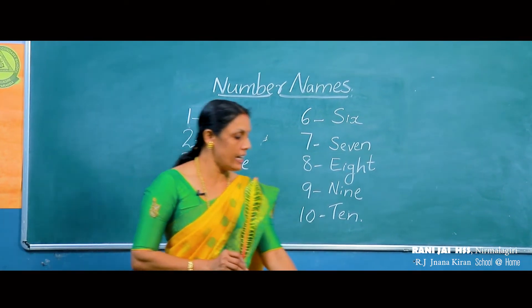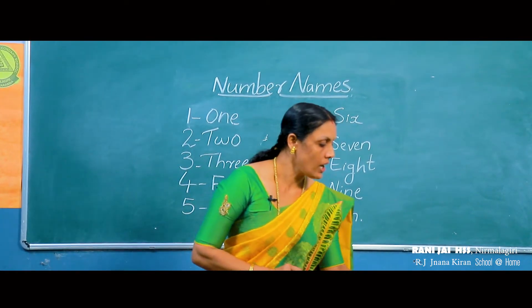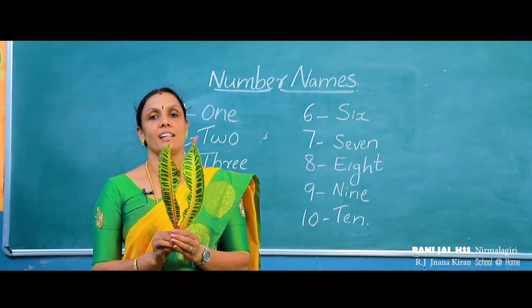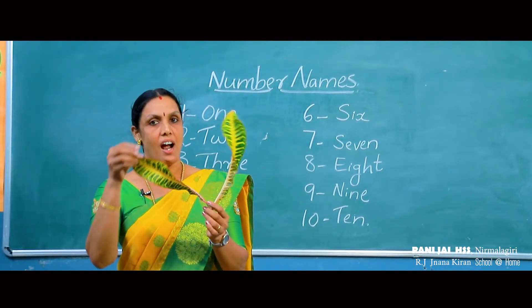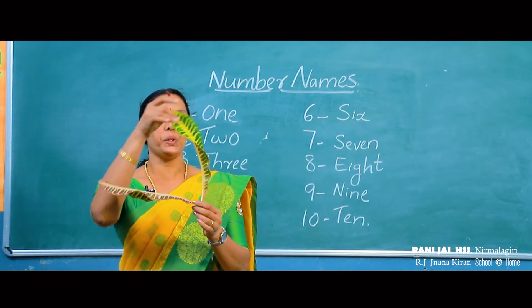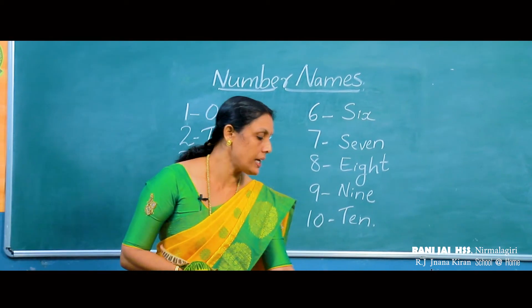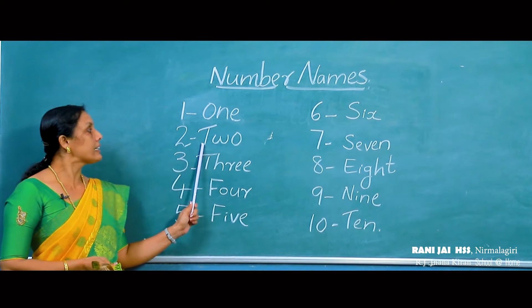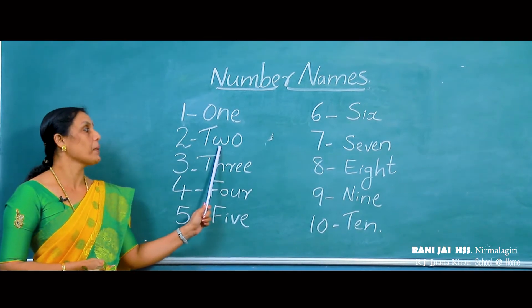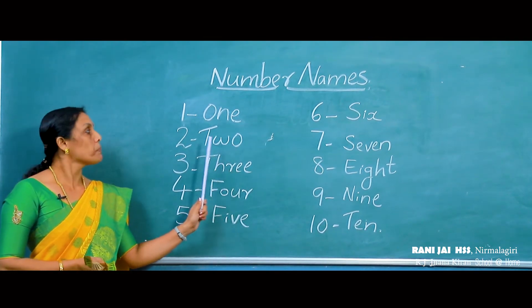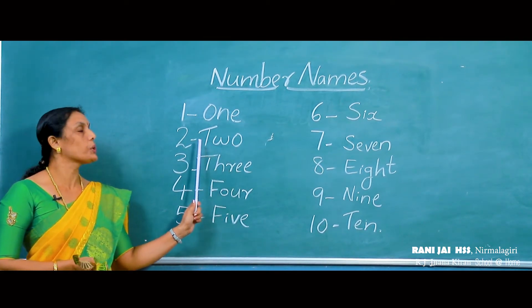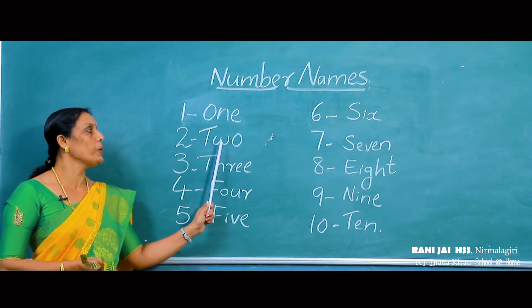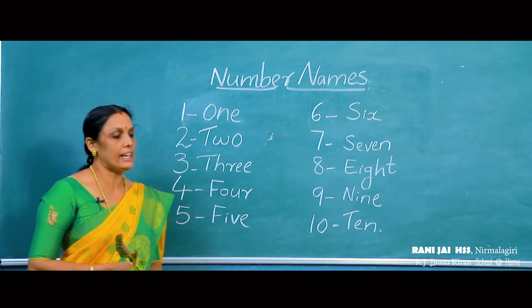Then, look here. How many leaves in my hand? Okay, count it. 1, 2. The number name of 2 is T-W-O. Spell the number 2 as T-W-O.